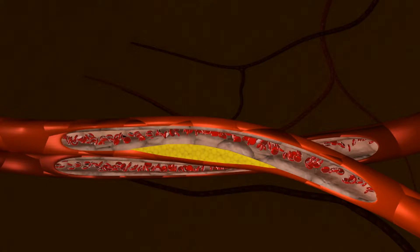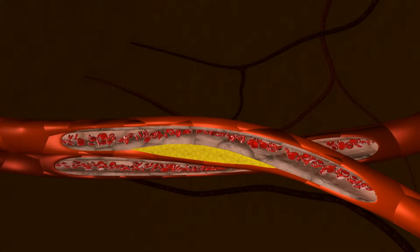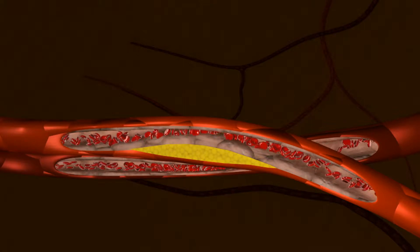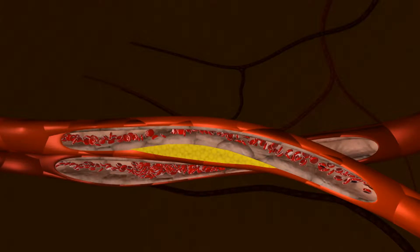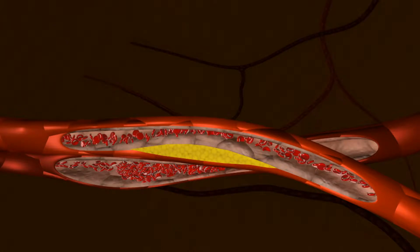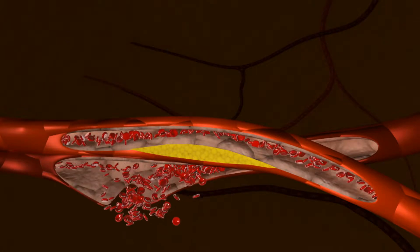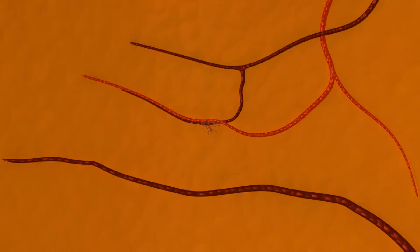With prolonged compression, a clot can form in the vein. After thrombosis, the venous pressure rises and the vessel wall may rupture, leading to bleeding into the retina. A large hemorrhage can cause sudden vision loss.